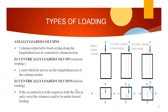There are different types of column based on loading conditions. The first type is the Axially Loaded Column — when the centre of gravity of the load exactly coincides with the CG of the column. The second type is the Eccentrically Loaded Column with Uniaxial Loading, where there is a difference in load only in the x-axis from the CG of the column, with no distance in the y-axis.